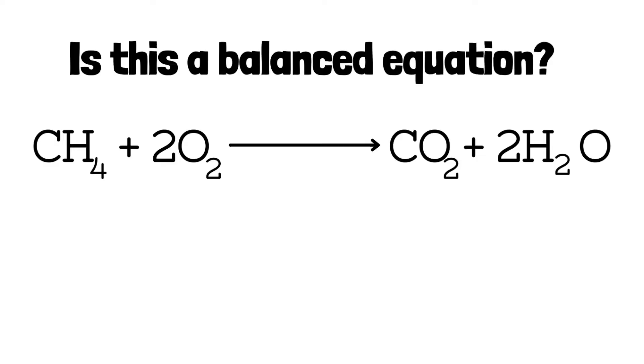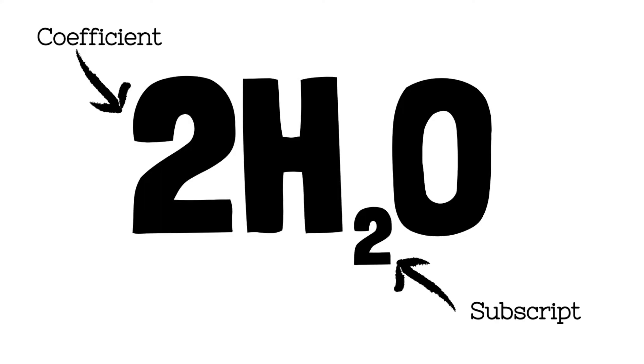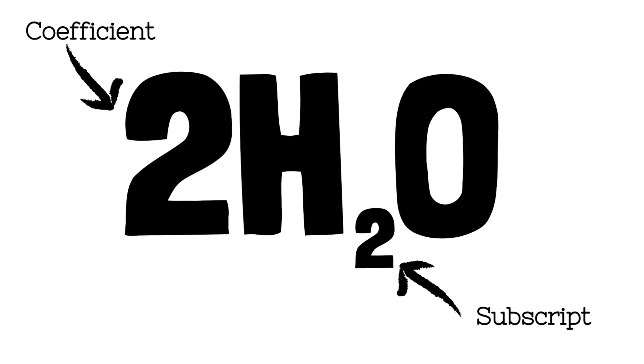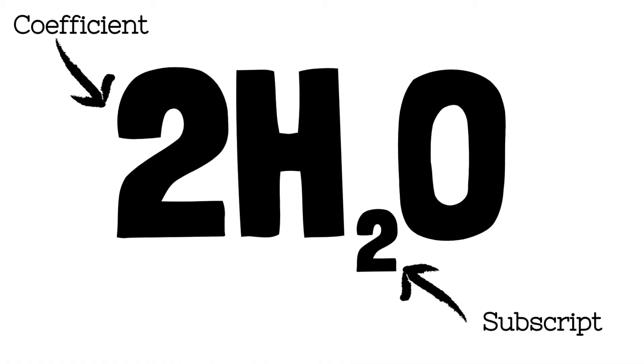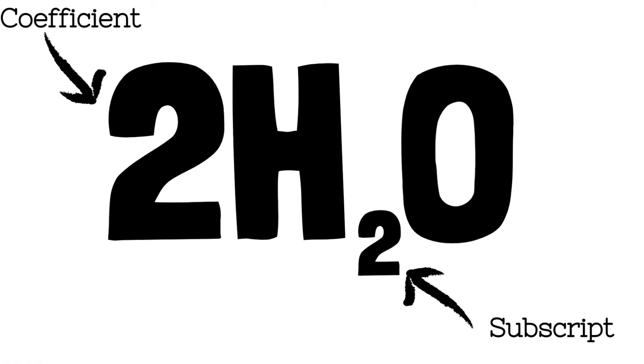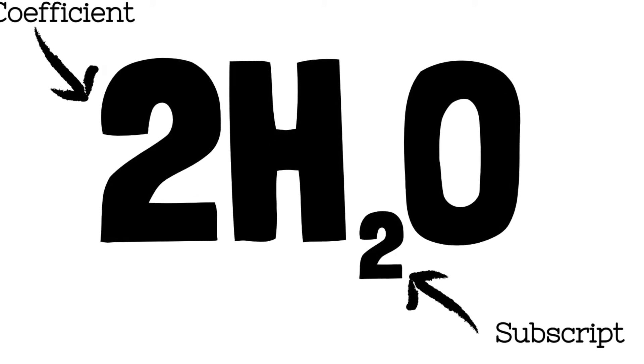What if you don't have those models? What if all you have to look at is the equation? This is where coefficients and subscripts come into the picture because they tell us how many of each element or each molecule we have in a chemical reaction. So let's take a closer look at how this works.